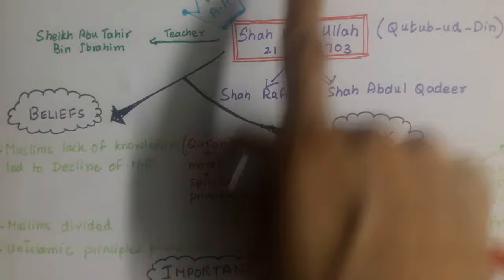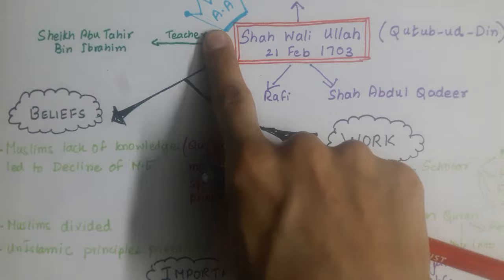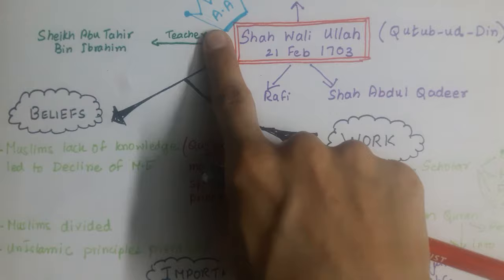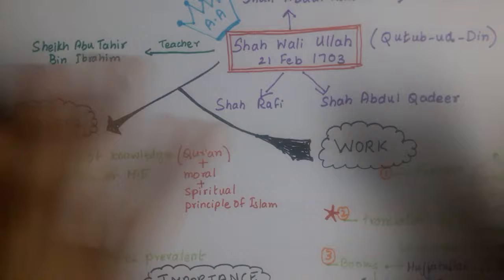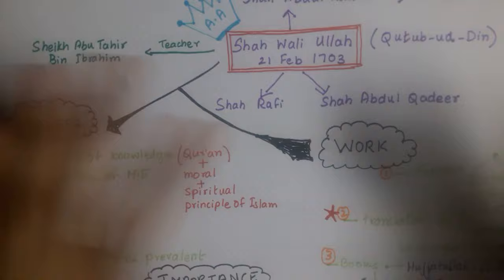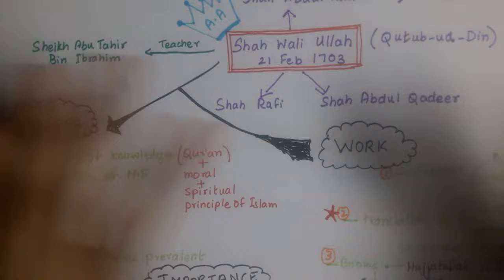So that's it — very simple. We have covered the main topic of Shah Waliullah: his date of birth, his father, his two sons, his teacher, his name, during whose reign he was born, his beliefs, his work, and the importance of his work. I hope this video was helpful. Please keep watching — I'll be making more videos on each and every topic, and we will cover the whole course this way, making it extremely easier for you to study. Thank you so much.